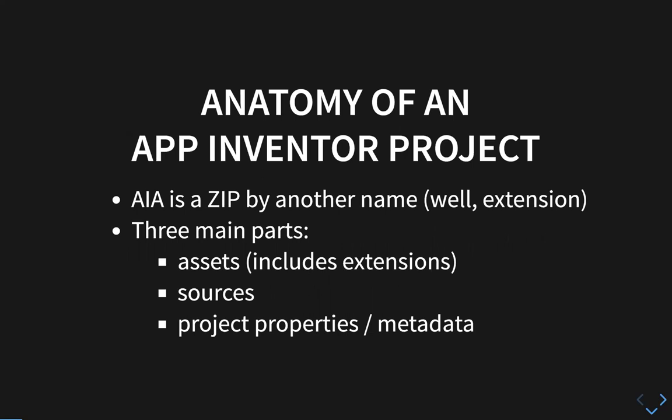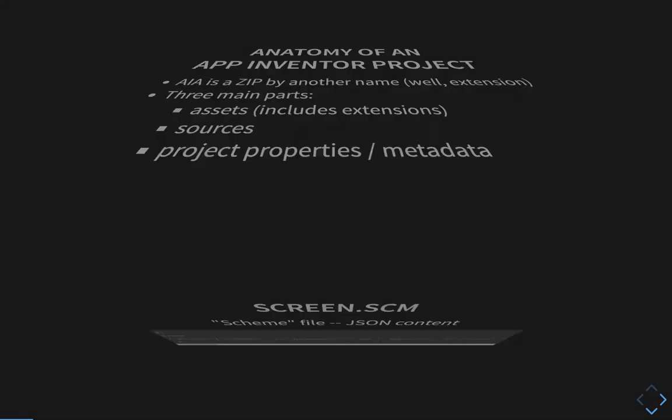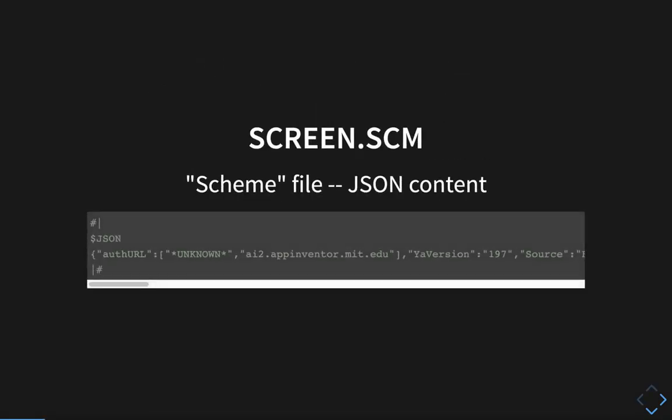For those of you who aren't familiar with the structure of an App Inventor project, basically an App Inventor project or an AIA file is just a zip file by another name. It's really composed of three main parts. There's the assets, which includes all the media you've added to a project as well as any extensions. It includes the source files for all of the screens in your app. And then there's some additional metadata, which we call the project properties.